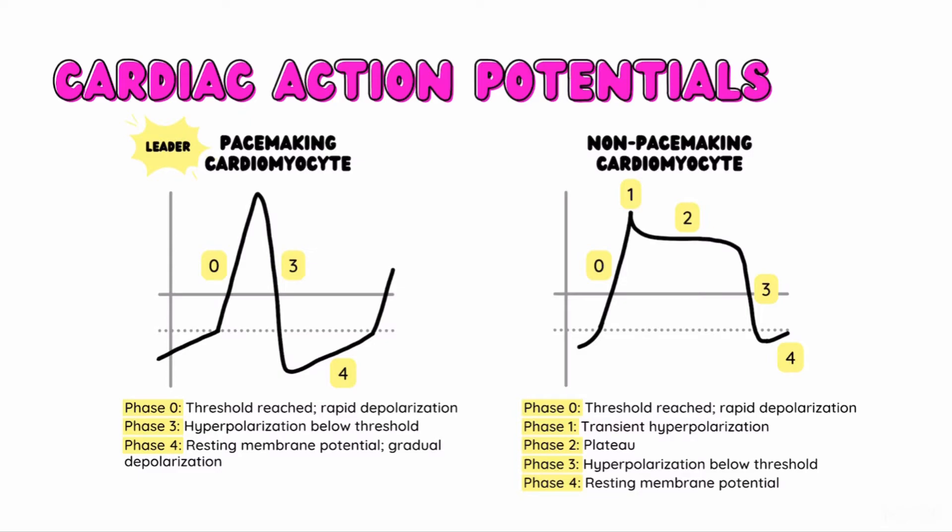When we put these action potentials side by side, you see how they are perfectly timed. The pacemaking cells have a prolonged phase 4 to wait for complete ventricular contraction before initiating the next beat, while the cardiomyocytes have a prolonged phase 2 plateau to carry out complete ventricular contraction. This coordination allows the cardiomyocytes to fully contract and push the blood out of the heart while beating with regularity.